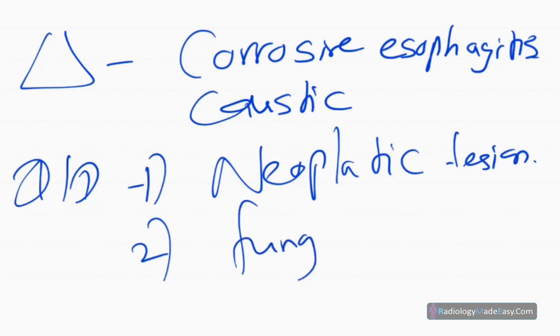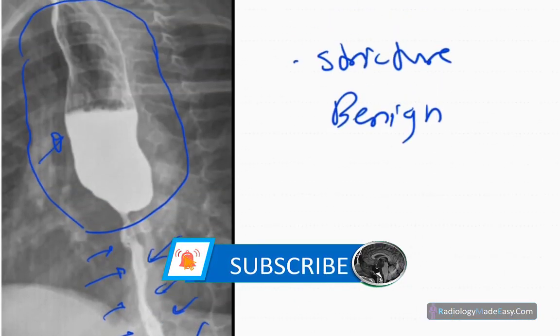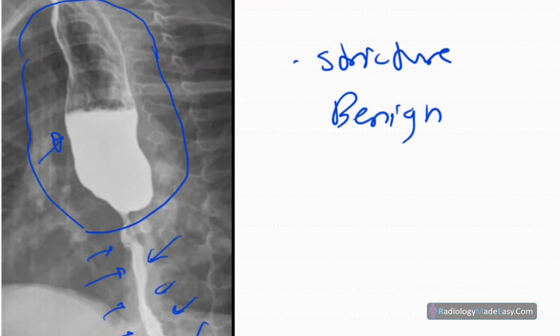So those are a few differential diagnoses for corrosive esophagitis or caustic esophagitis. This is a late complication of caustic esophagitis. Earlier, there'll be perforations of the esophagus, so there'll be leakage of contrast into the mediastinum causing pneumomediastinum.